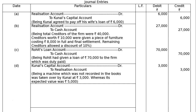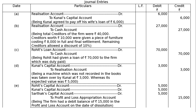Part E: The firm had a debit balance of Rs.15,000 in the Profit and Loss Account on the date of dissolution. Since this is a loss, the capital accounts are debited. Entry: Rohit's Capital Account debited Rs.5,000, Kunal's Capital Account debited Rs.5,000, Sarthak's Capital Account Rs.5,000 — to Profit and Loss Account. Note: it is only the Profit and Loss Account, not the Appropriation Account. Written off among old partners in the old ratio.